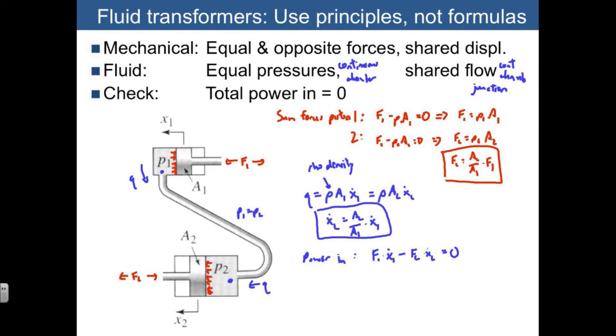Well, we already have formulas that allow us to eliminate F2 and x2 dot. So let's first eliminate F2, that's A2 over A1 times F1. And then x2 dot is just A2 over A1 times x1 dot. Immediately we see that all of the A's cancel each other, and so we get F1 x1 dot minus F1 x1 dot, and so we can verify this does indeed equal zero. So that means that our total power in is equal to zero as we expected.